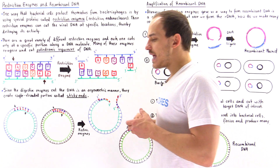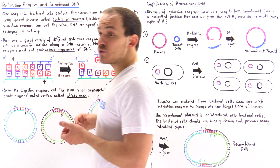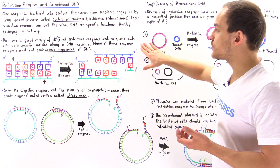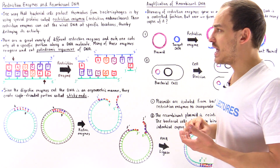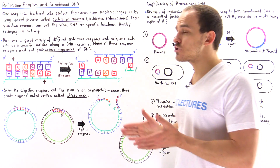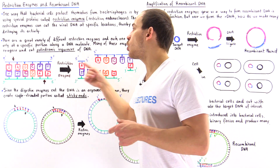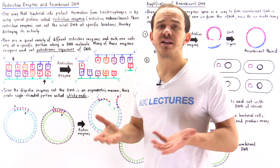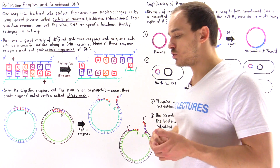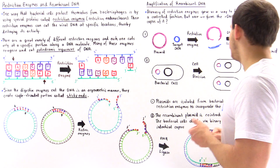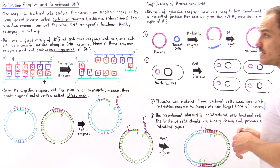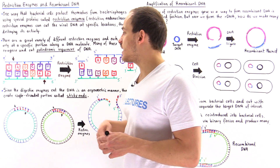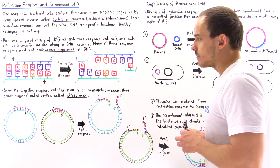In our study of restriction enzymes, we realized that many of these restriction enzymes actually cut at palindromic sequences along that double-stranded DNA molecule. To see what we mean by a palindromic sequence of DNA, let's take a look at the following diagram.